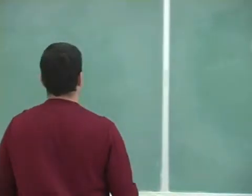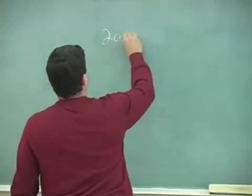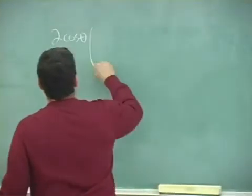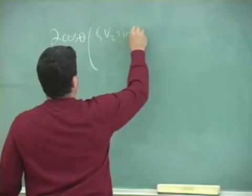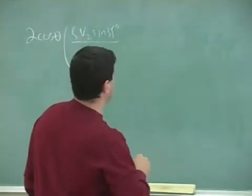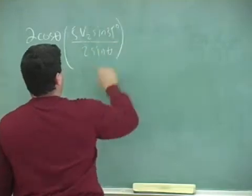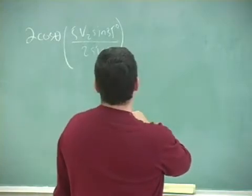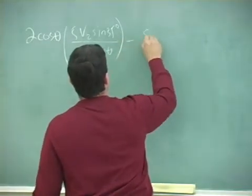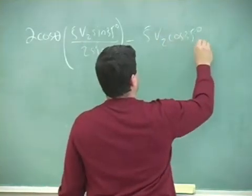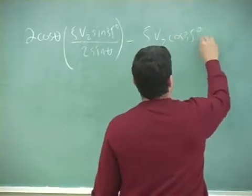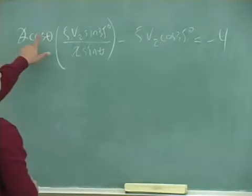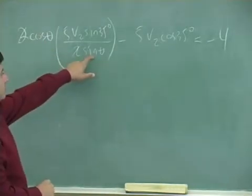So we have two cos theta. And then V one is gonna be five V two sin of 35. And then minus five V two sin, no, let's see, minus five V two cos 35 equals to negative four. And now you have here the two and the two, and then cosine theta, sine theta, right? So that's tangent theta on the bottom.